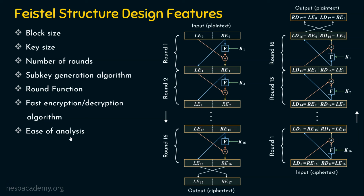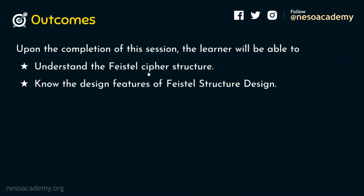Finally, the seventh feature is ease of analysis. From a cryptanalyst's perspective, it should not be easy to analyze the entire process — it should be difficult and not feasible to cryptanalyze. At the same time, the algorithm should be explainable concisely and clearly so we can analyze it for cryptanalytic vulnerabilities and develop a higher level of assurance of its strength. Examples include DES and AES. I hope you now understand the Feistel cipher structure and its design features, which are applicable to block ciphers in general.